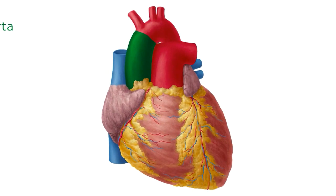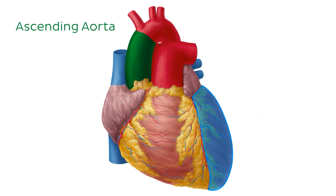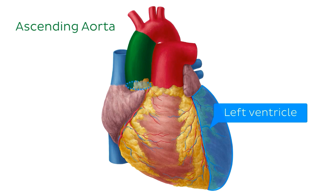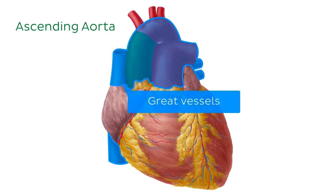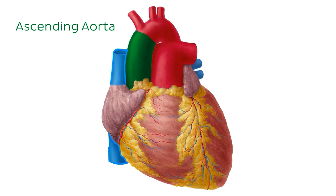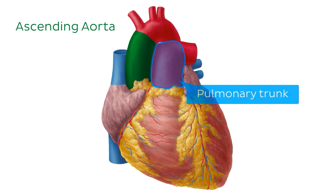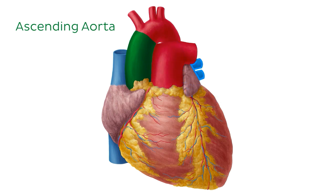We're going to begin with the ascending aorta, which you can now see highlighted in green. The ascending aorta receives richly oxygenated blood from the left ventricle of the heart, transmitted by the appropriately named aortic valve. In this illustration we can also see most of the other great vessels arriving or departing from the heart — for example, the inferior and superior vena cavae, the pulmonary trunk, and the left pulmonary veins.